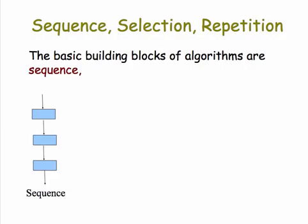Let's think about how algorithms are constructed. The basic building blocks of algorithms are three. The first is sequence, which is just a sequence of statements, one after the other, but in order. So this case is the first step, the second step, the third step of the algorithm.